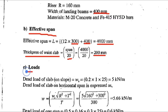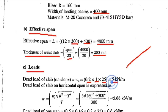Next we find out the loads — dead load and live load. Dead load of slab on slope: for the inclined portion, W is equal to 0.2 (thickness of slab) into 1 (one metre length) into 25 (unit weight of concrete), giving a total of 5 kN/m. This is for the inclined portion.